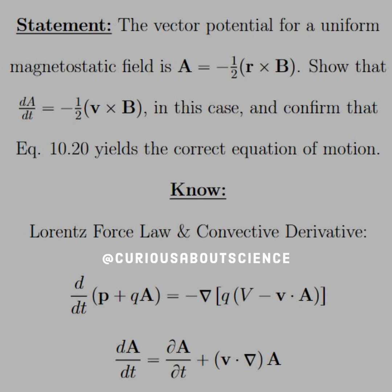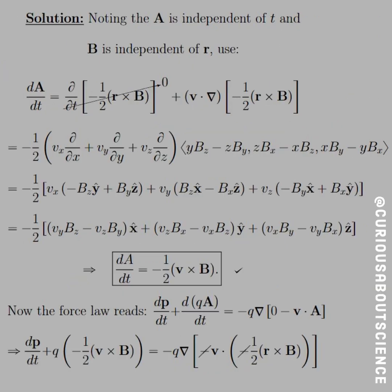Let's see how to work with this stuff. So let's note here that A is independent of t, and B is independent of r. If we go back to the potential here.